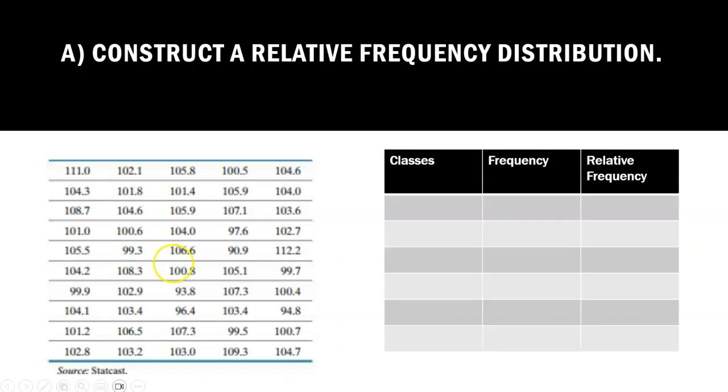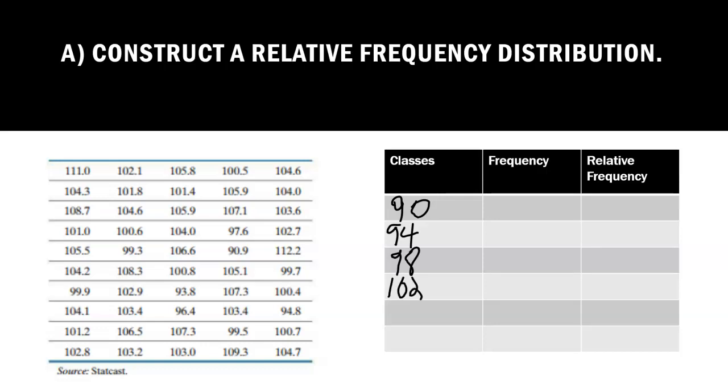First of all, we have to start with our classes. The lower limit of the first class is 90. It said I want the class width to be 4. So I would add 4 to 90 to get 94 to get my second class lower limit. Then I would add 4 to that, 98, to get my next class lower limit. I would add 4 to that, which is 102, then 106, and 110. That is how I get my lower limits by adding that class width to my first lower limit.